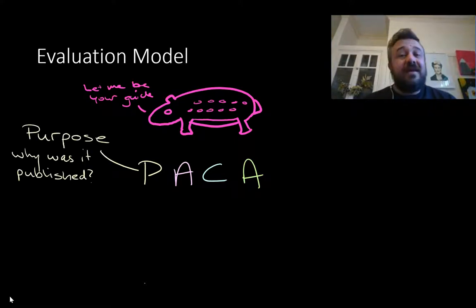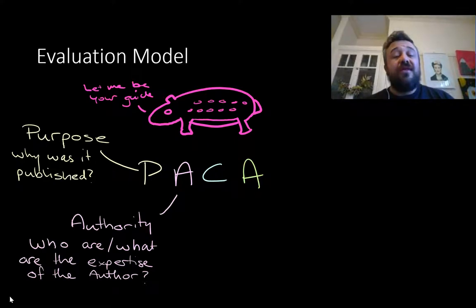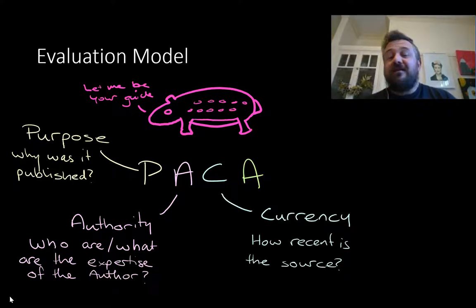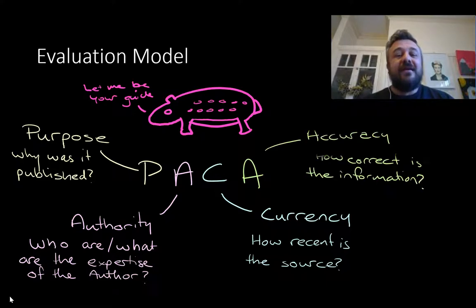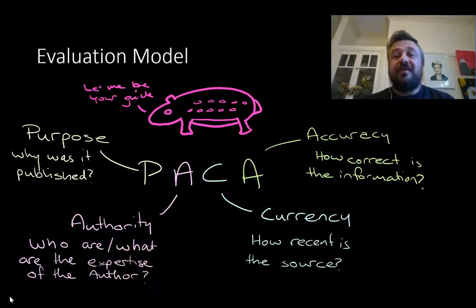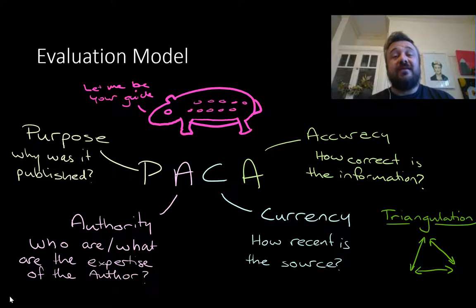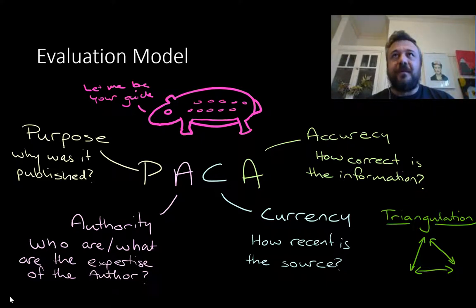We'll start with the P — it's an acronym. What's the purpose? Why was this secondary source published in the first place? Then we go to A, which is authority — who are or what are the expertise of the author or publisher? Because the publisher has a lot to do with it, as in who's produced it, who's paid for it to be made. Currency — that's how current it is, how recent. Some ideas become outdated pretty quickly. And accuracy — how correct is the information? That's really important and actually probably a bit trickier to work out than you think. Finally, triangulation — this is where we can find at least two other sources that are independent and back up what we're talking about. So that's our framework.